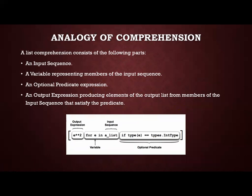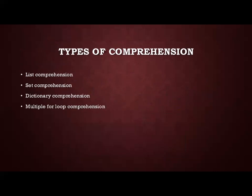So this is about List Comprehension, and this can be used for List, Set, and Dictionary — that's what we are going to see in the next slides. The types of Comprehension are: List Comprehension, Set Comprehension, and Dictionary Comprehension. There are many different complex actions possible in Comprehension. We will also see an example of multiple for loop comprehension — that is, a for loop inside another for loop.